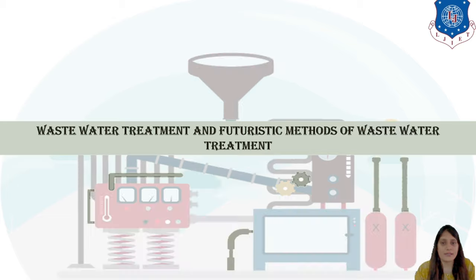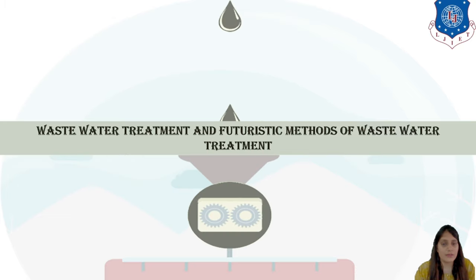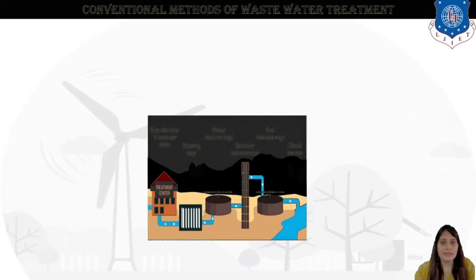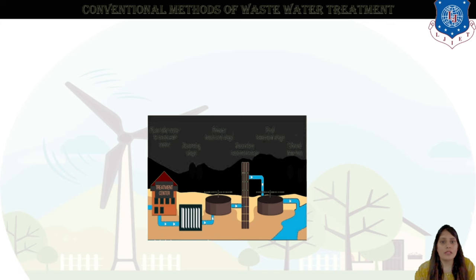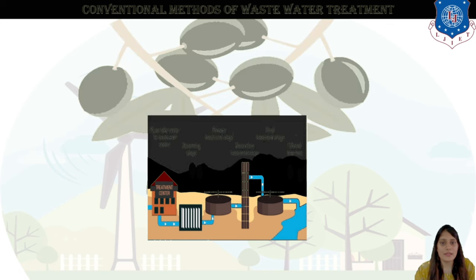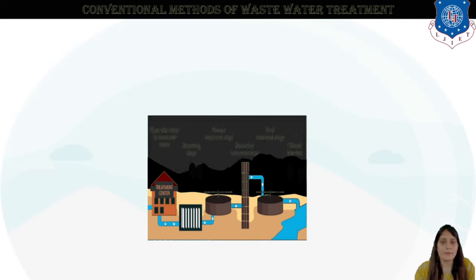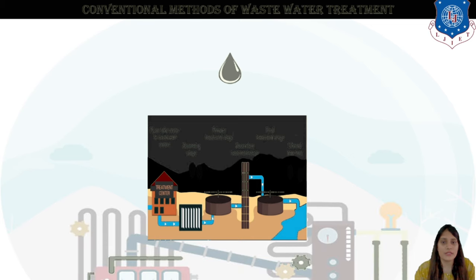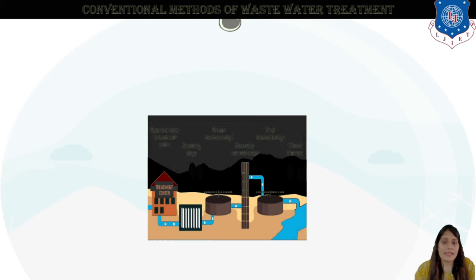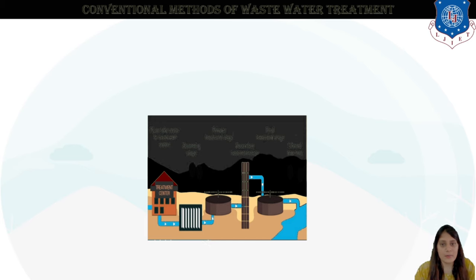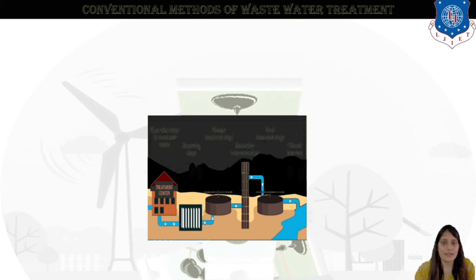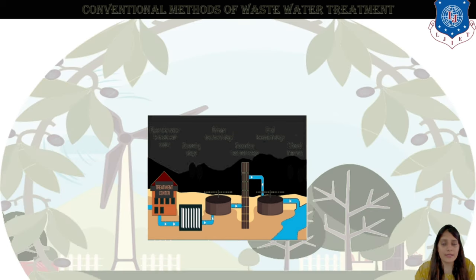In the previous session we discussed water purification techniques — the drinking water which we consume and how it is implemented. Now let's discuss the conventional method of wastewater treatment. You can see here there is a pipe that takes water to the treatment center: the screening stage, primary treatment, secondary and final treatment stage, and then it is filtered into the river. So wastewater is treated and then it can be sent into the rivers.